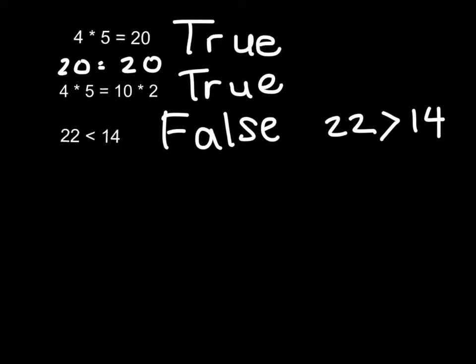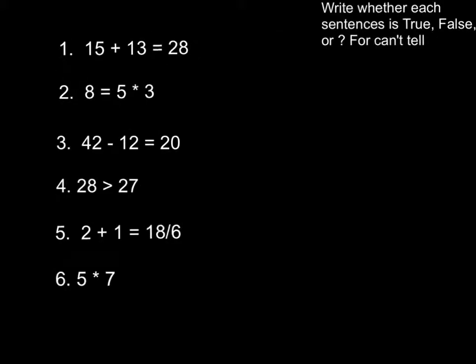So what we're going to do is work on writing whether a number sentence is true or false, or sometimes you could write a question mark if there's not enough information that you can tell. For the number sentences 1 through 6, you are going to write on your whiteboard whether each sentence is true, false, or if you don't have enough information, a question mark for can't tell.